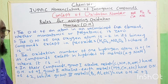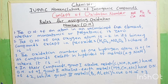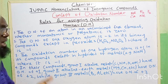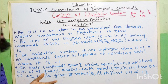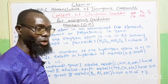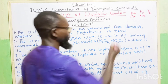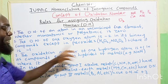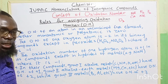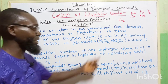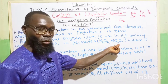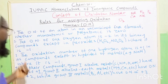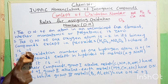Number two: the oxidation number of one oxygen atom is minus two in its binary compounds. The oxidation number is minus two, except in peroxides. When oxygen occurs in peroxides, like hydrogen peroxide or sodium peroxide, its oxidation number will be equals to minus one and not minus two.